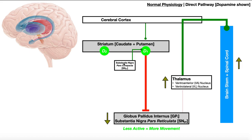Now let's add in the substantia nigra pars compacta. This is the specific region of the substantia nigra that is impacted in Parkinson's disease. It can modulate the direct and indirect pathways by releasing dopamine. The regions of the striatum involved in the direct pathway have D1 receptors — receptors for dopamine — and the substantia nigra releases dopamine to bind to these D1 receptors.